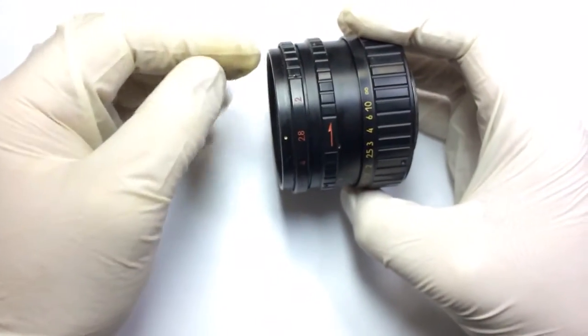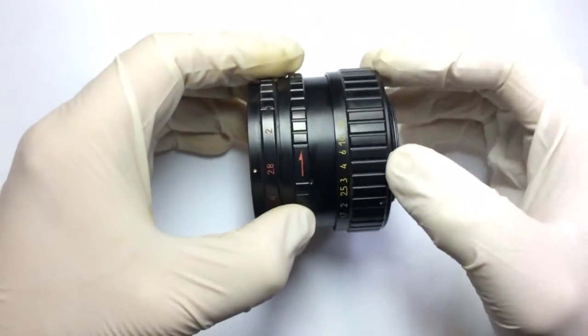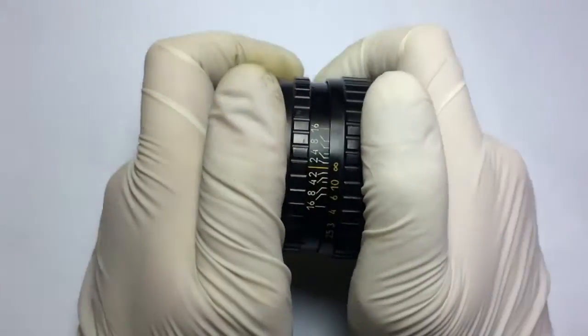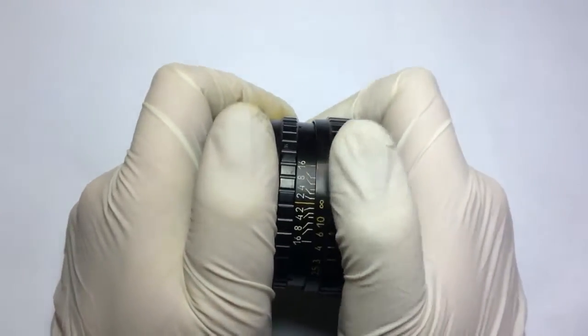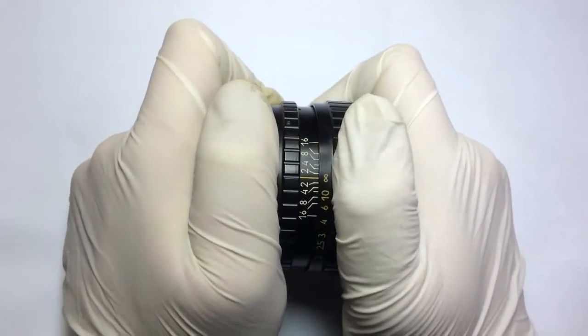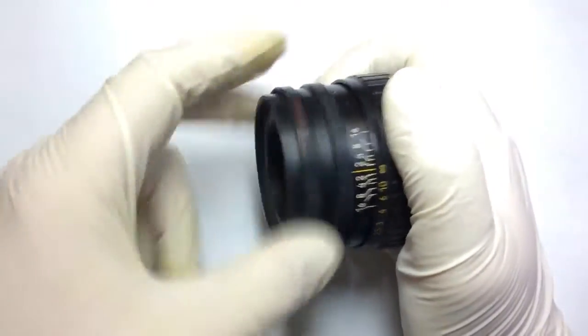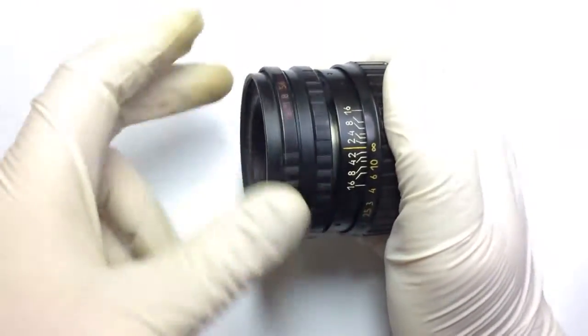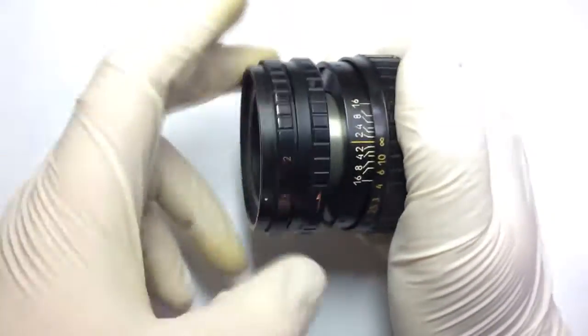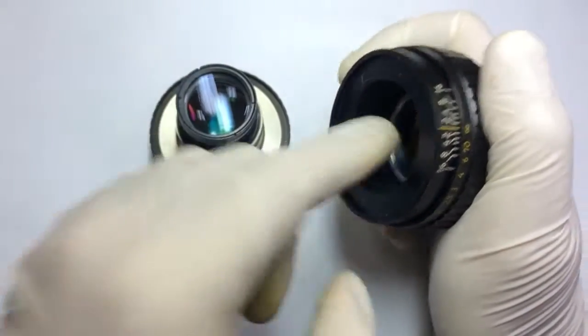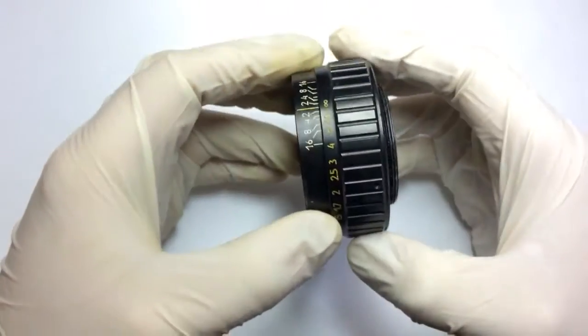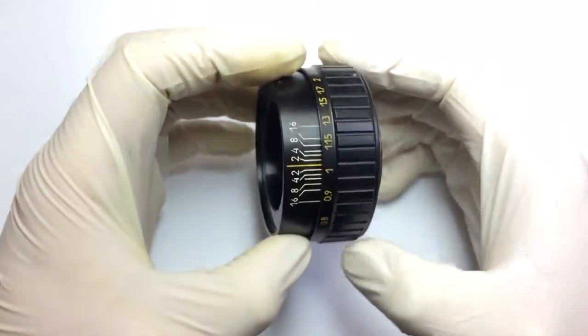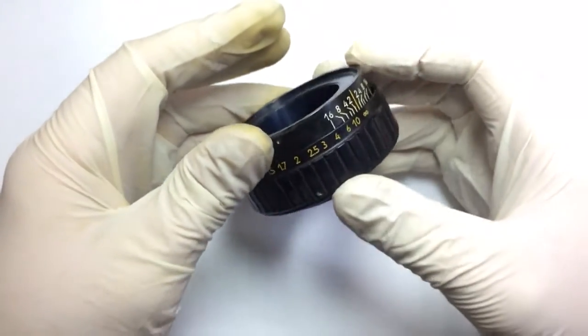First of all we need to separate the optical block from the helicoid part. To do this, you take the lens in this position and turning to the left, sometimes you need to apply force, you unscrew it as usual as ordinary Helios 44.2. So this we don't need. There is also an adjusting ring. This we don't need. We just put it apart. We will work with this focusing part.